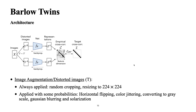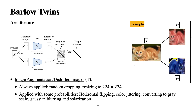For image augmentation, we always apply random cropping and resizing. With some probability, we also apply horizontal flipping, color jittering, converting to grayscale, Gaussian blurring, and solarization. These are the two different augmentations applied to produce the two views used in the architecture.